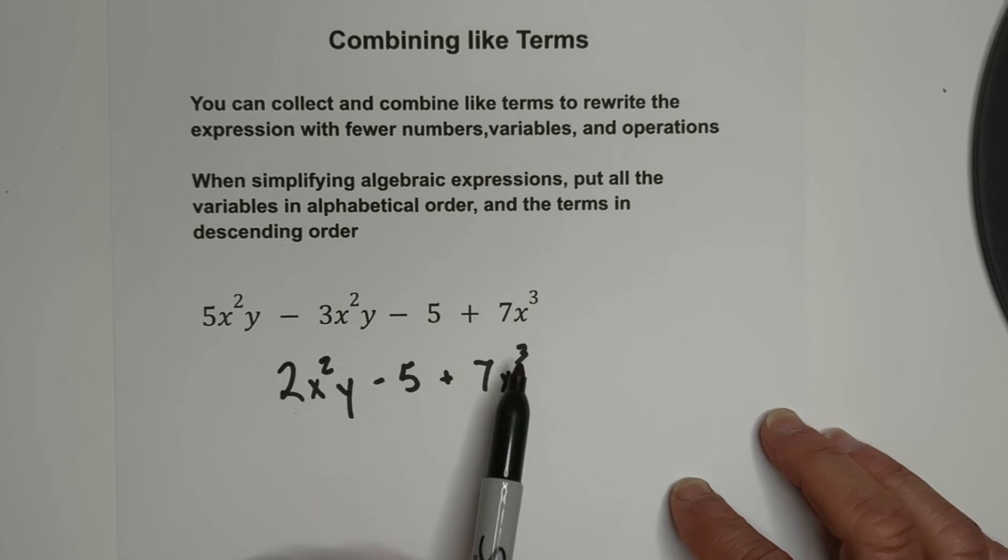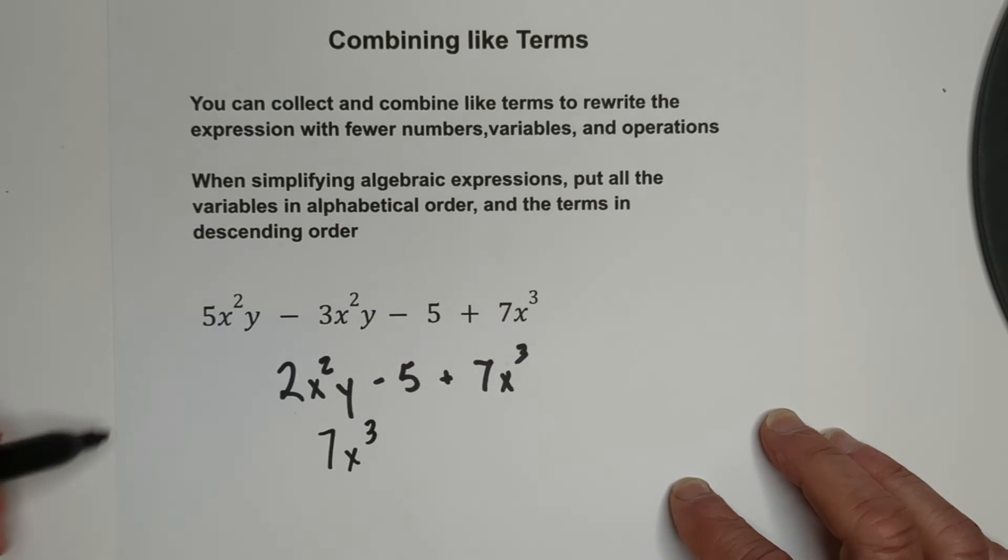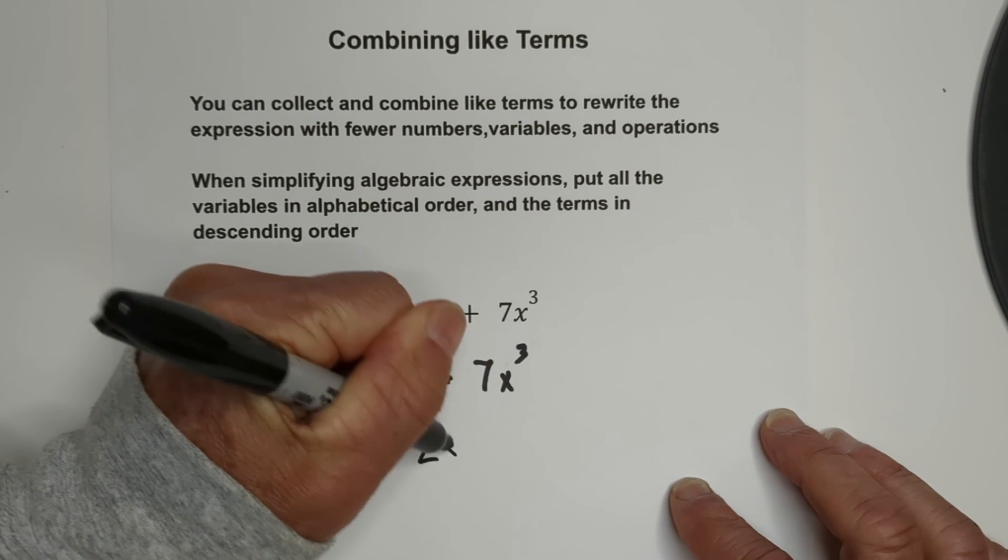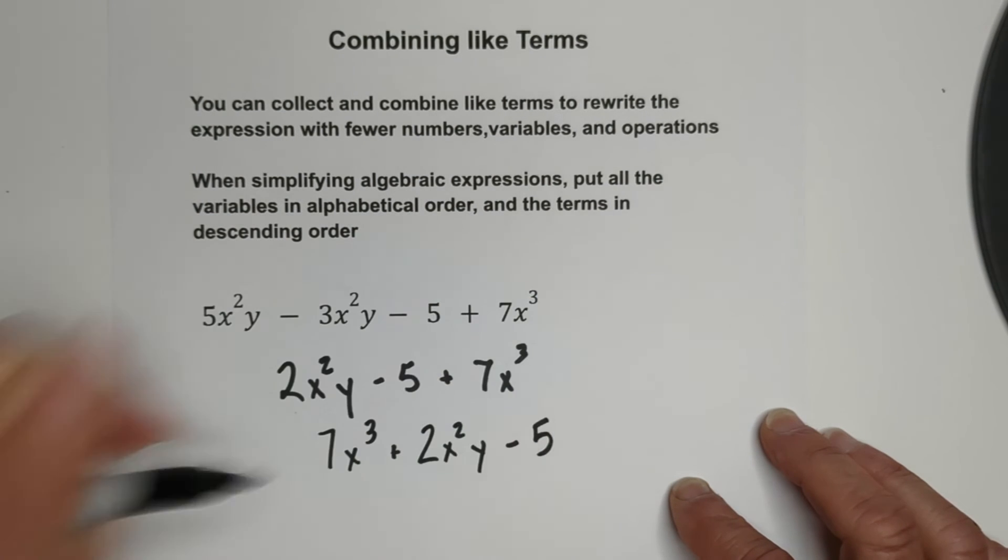First, based on the exponent, and then it would go in alphabetical order. So this is cubed, so let's write it first, seven X cubed. Then we have this is squared, so we're going to have two X squared Y, and then the constant will be last.